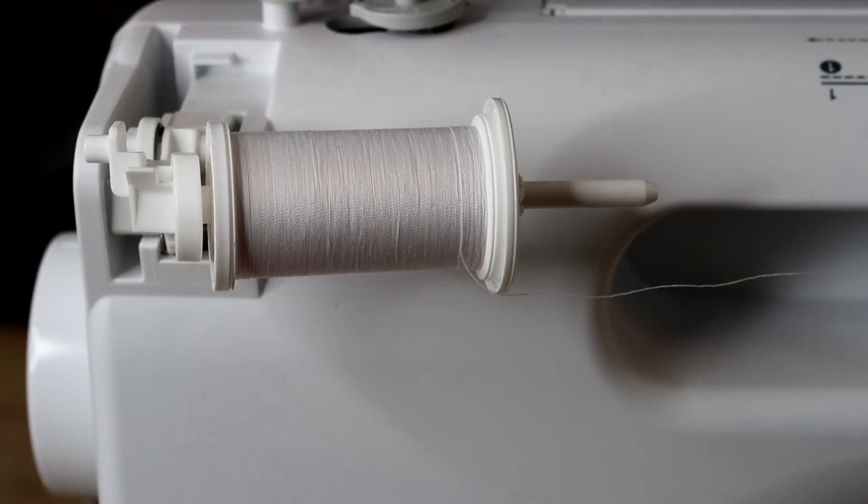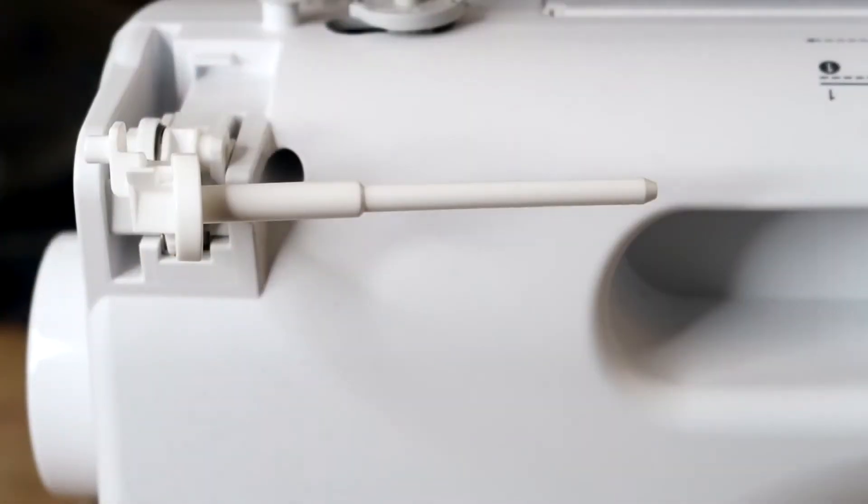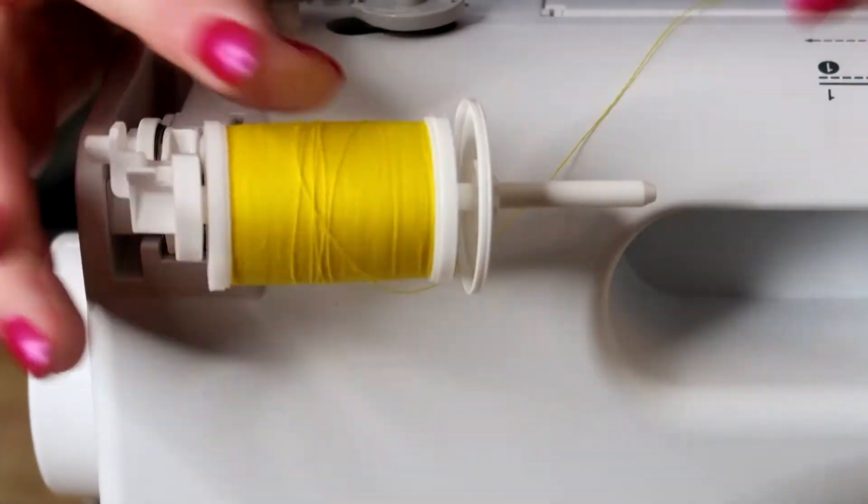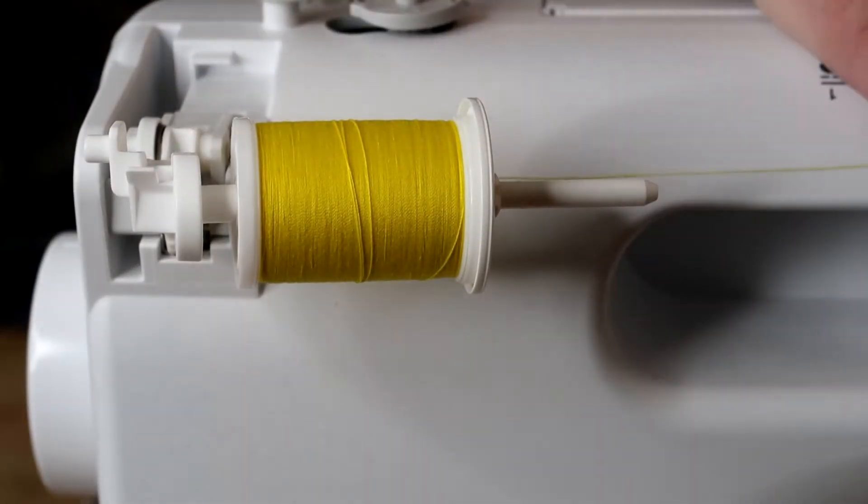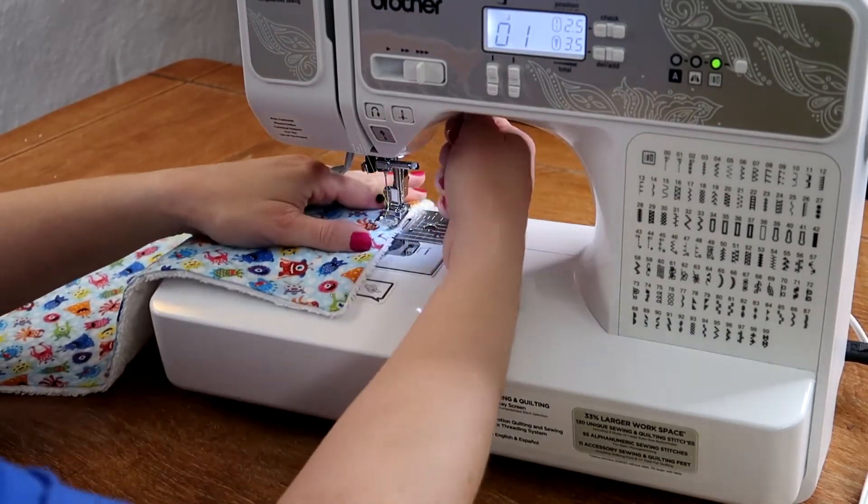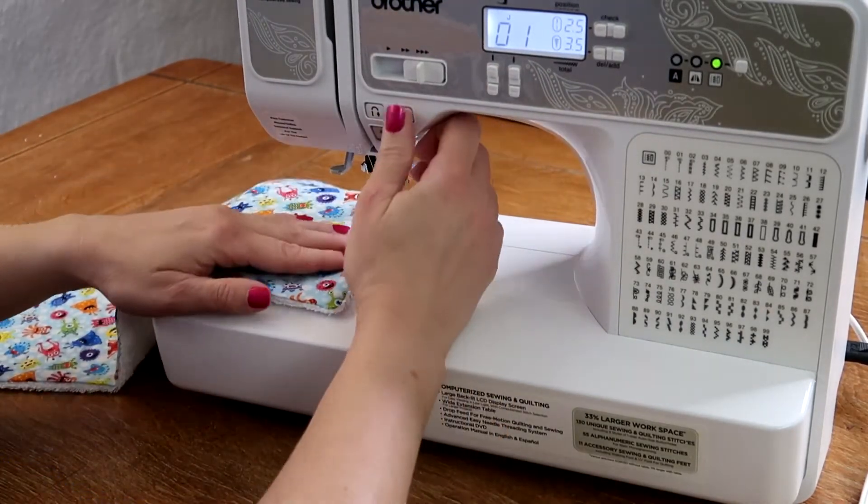Pick a coordinating color for the topstitching. Topstitch with a quarter inch seam allowance. I move my needle over and then use the edge of the presser foot as a guide.